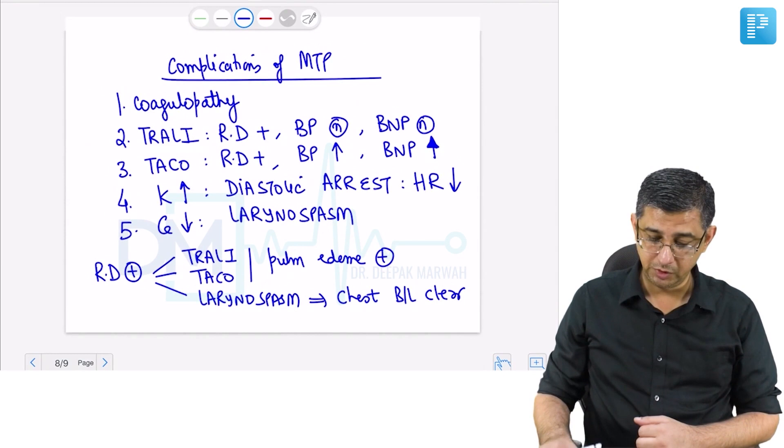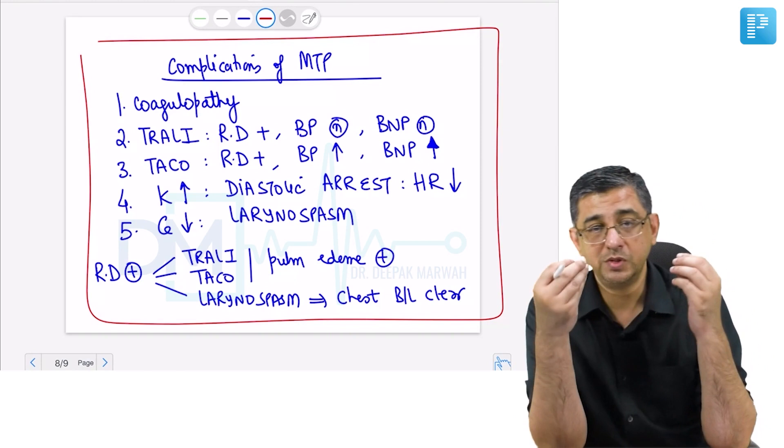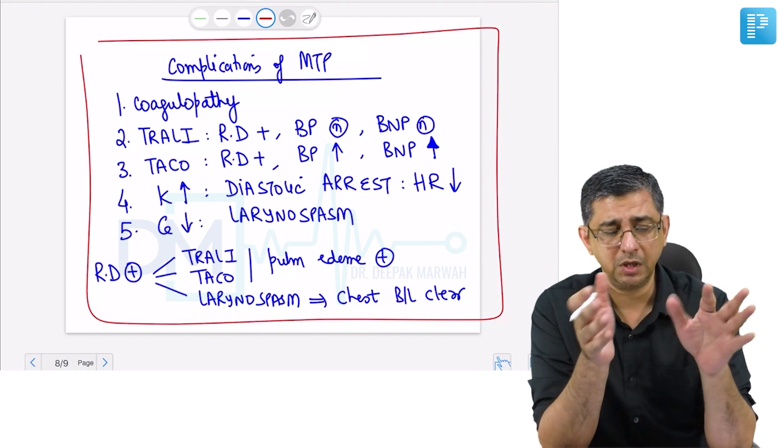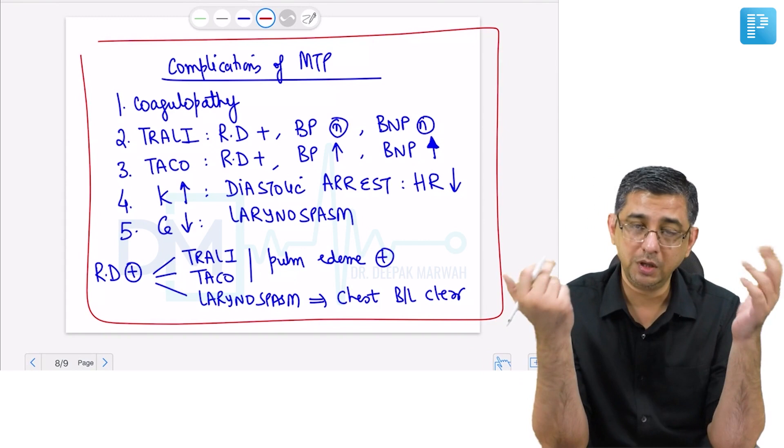Complications of blood transfusion are obviously asked in the exam. I've discussed them separately with respect to transfusion biology, but here my objective was to sensitize you that in older questions they were not giving clinical information. They just said massive transfusion protocol, person is still bleeding—what is the cause? Coagulopathy. But now they say he's having respiratory distress. The answer is obviously not coagulopathy.